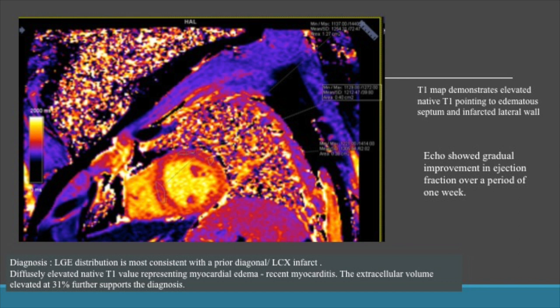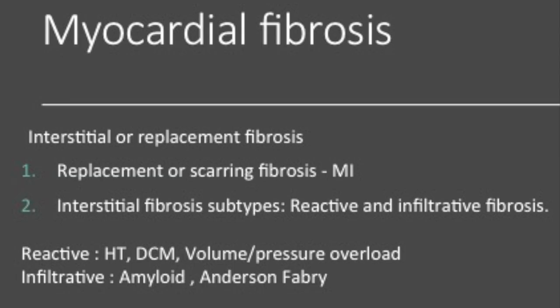Before we discuss the details of T1 mapping, we need to know the types of myocardial fibrosis. There are two types: interstitial fibrosis and replacement fibrosis. Replacement fibrosis occurs in patients with infarctions.